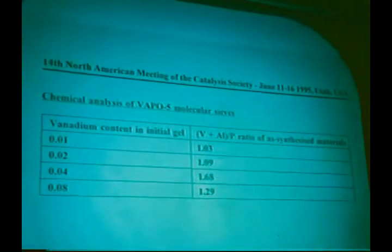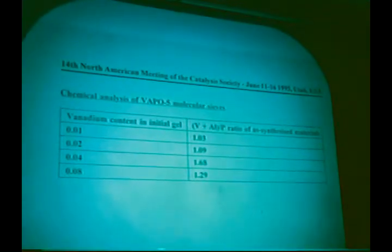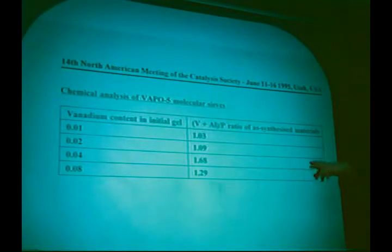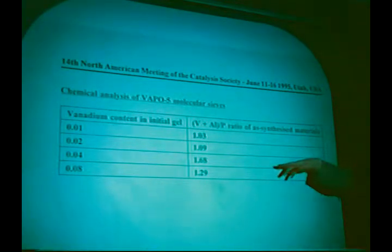We have also chemically analyzed some of these samples. Here I show you the chemical analysis of VAPO5 molecules as a function of the initial gel vanadium content. The chemical analysis is expressed as the vanadium plus aluminum over the phosphorus ratio. For the lowest vanadium content, we see that we have a ratio near one. For the higher loadings, we see that it's deviating from one—it's higher. So for the lowest loading, one can say that if vanadium is substituting in the molecular sieve, vanadium is substituting for an aluminum site. For higher loadings, we can explain this as the formation of an extra lattice vanadium phase.